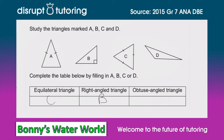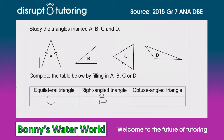We move on now to our obtuse angle triangle. An obtuse angle is an angle that is greater than 90 degrees. Looking at A, all the angles are smaller than a right angle, meaning they are acute, so A cannot be the answer. Likewise for B, the angles are smaller than 90 degrees, except for the one that is exactly 90 degrees, so that cannot be the right answer either. Similarly, C has all acute angles smaller than 90 degrees.